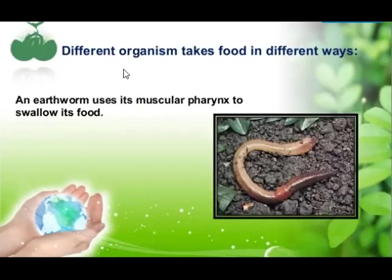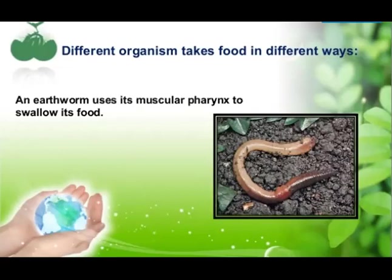The earthworm uses its muscular pharynx to swallow its food. It swallows food through its mouth as a whole without chewing. Without chewing, the earthworm simply swallows its food.